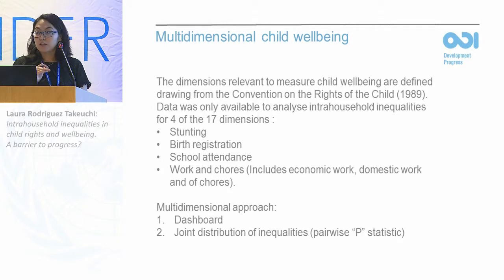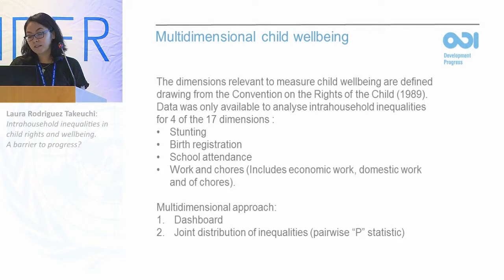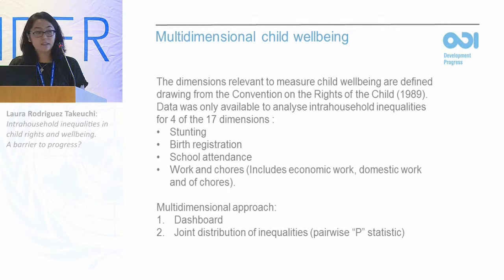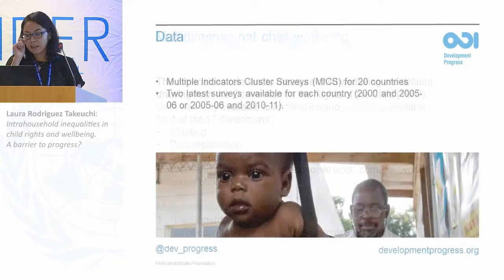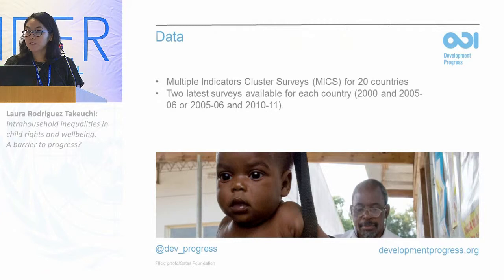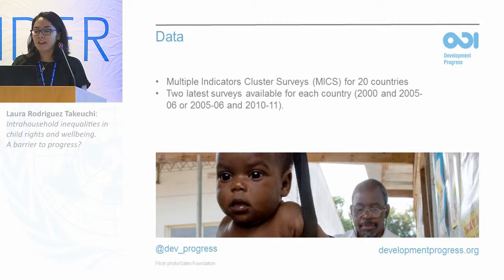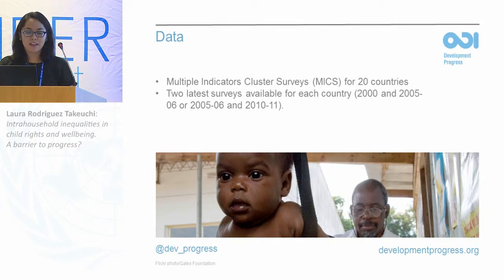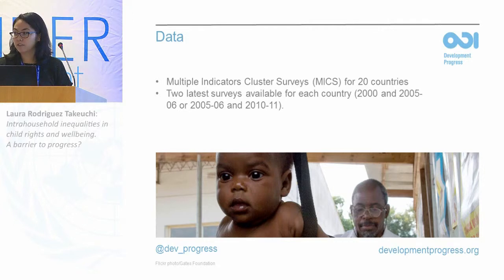First I look at each of the dimensions separately, and then I try to assess how inequalities within households are jointly distributed. The dimensions are drawn from the Convention on the Rights of the Child, which defines 17 dimensions, though I'm only able to look at four due to data limitations — we need information for individual children, for boys and girls separately. Data comes from the MICS surveys from UNICEF for about 20 countries, using the two latest surveys available for each country, roughly corresponding to a five-year gap between surveys.